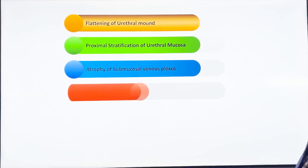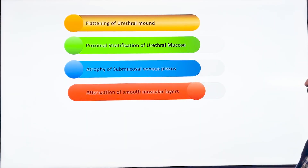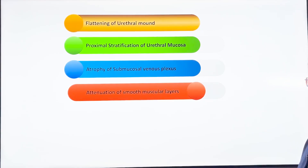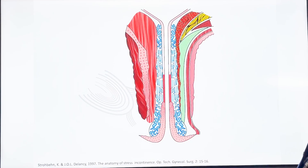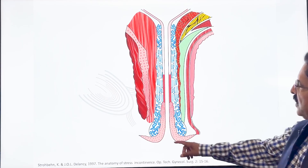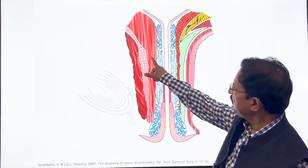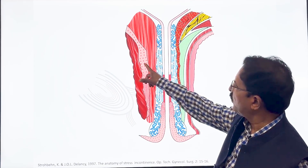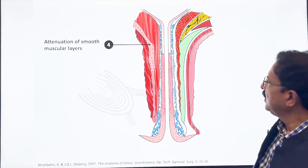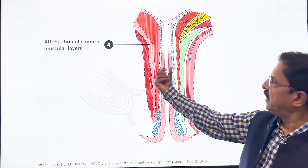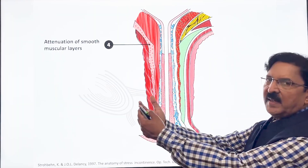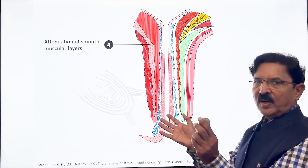The fourth change is attenuation of the smooth muscle layers — both the inner longitudinal and the outer circular. If you look at this diagram, both become thinner anteriorly and anterolaterally.